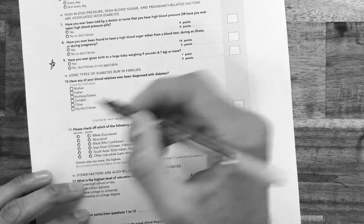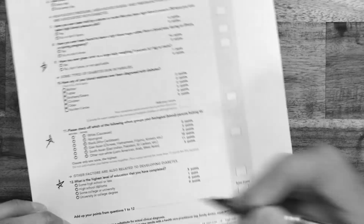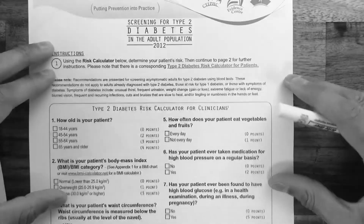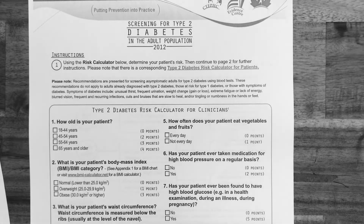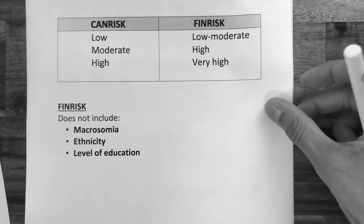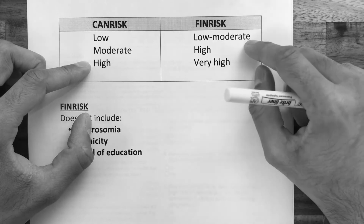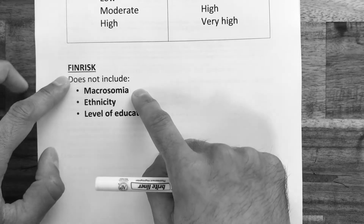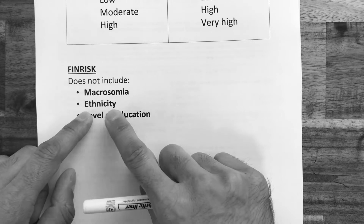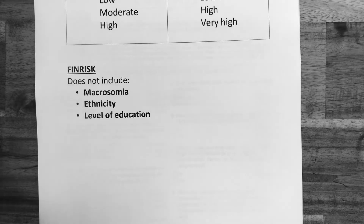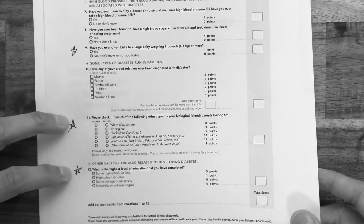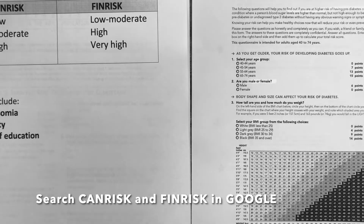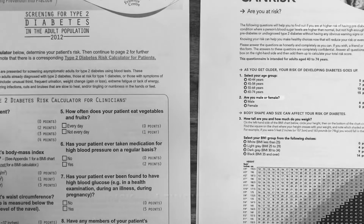The main differences between CAN risk and FIN risk: CAN risk classes people as low, moderate, or high, whereas FIN risk uses low, moderate, high, and very high. The FIN risk does not include questions on macrosomia, ethnicity, or level of education — those three questions are not in the FIN risk. Both risk calculators can be found online at the Diabetes Canada website or by searching on Google.